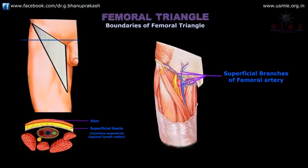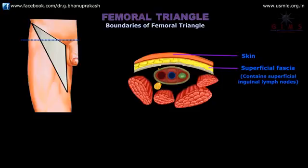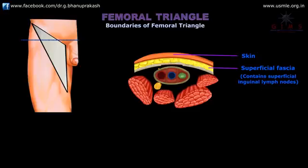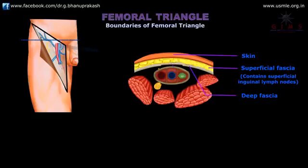In the superficial fascia of the front of the thigh we have an important vein called the long saphenous or great saphenous vein. So in the roof, from superficial to deep: the skin, then the superficial fascia of the front of the thigh over the femoral triangle along with its contents, and the third layer — after removing the superficial fascia — is the deep fascia with the saphenous opening and cribriform fascia. These are the structures forming the roof of the femoral triangle.